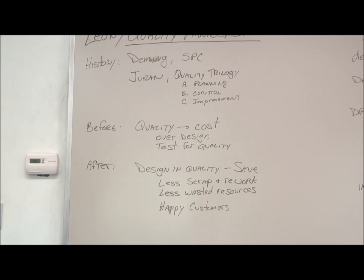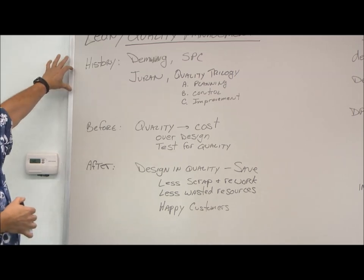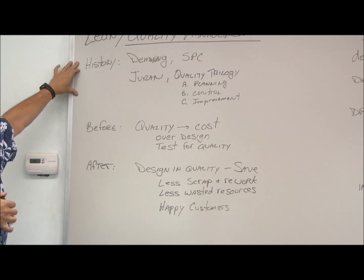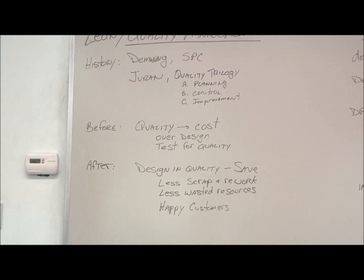Brief history on quality management. It was started by two Americans, Edward Deming and Joseph Duran. Nobody would listen to them in the United States, so they actually went to Japan.